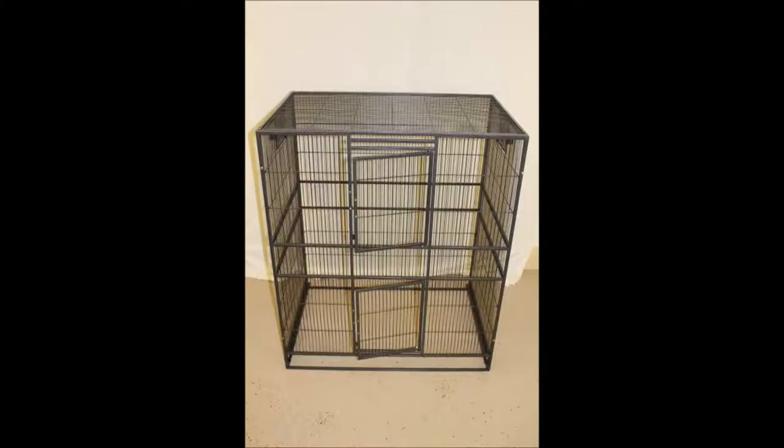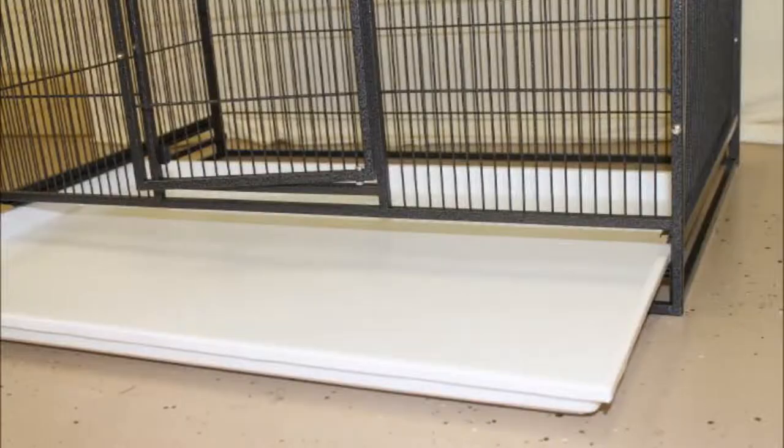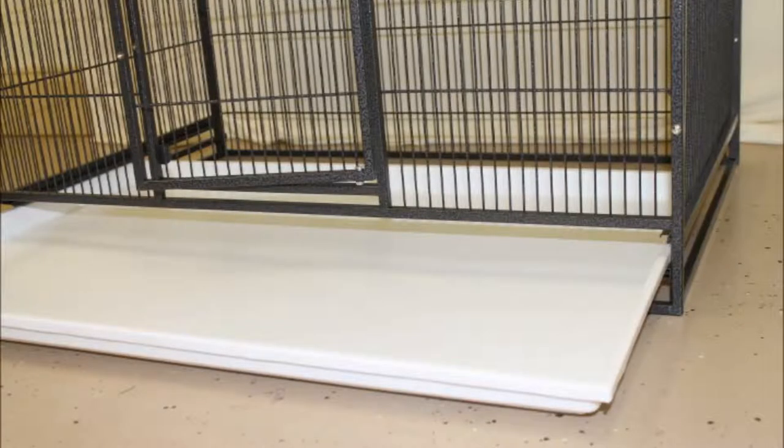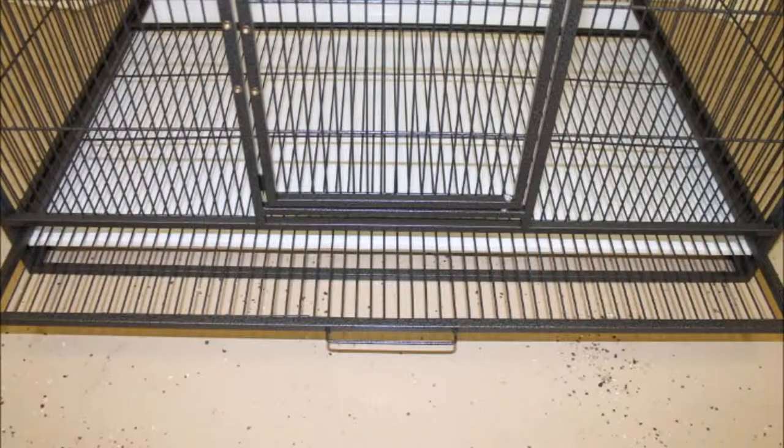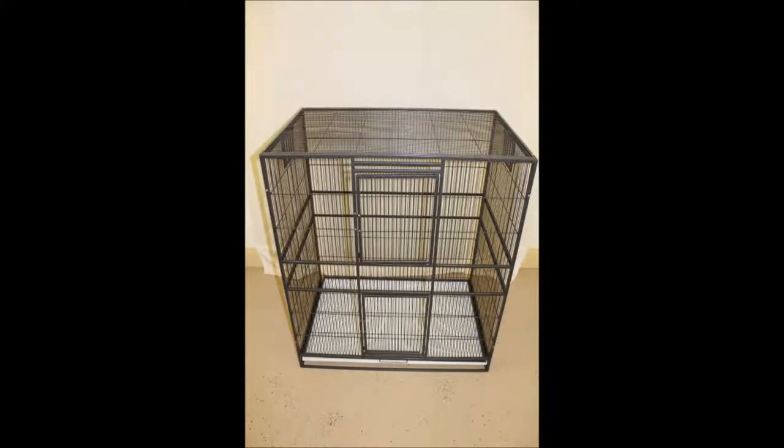The cage should look like this, with all four side panels and the roof in place. Now, you can insert the pull out tray into the very lowest gap, then slide in the bottom grate with the handle on top of the tray. Both the tray and the grate should slide in easily and fit at the bottom of the cage.